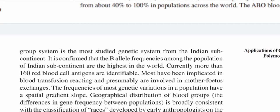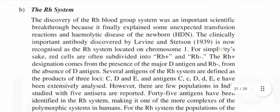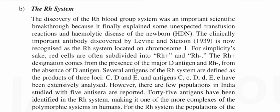The differences in gene frequency between populations are broadly consistent with the classification of races developed by early anthropologists on the basis of visible features. The Rh blood group system: the discovery of the Rh blood group system was an important scientific breakthrough because it finally explained some unexpected transfusion reactions and hemolytic disease of the newborn (HDN). The clinically important antibody discovered by Levine and Stetson in 1939 is now recognized as the Rh system, located on chromosome 1.